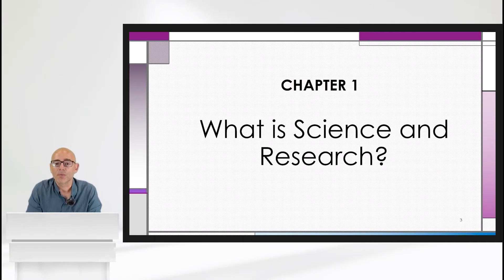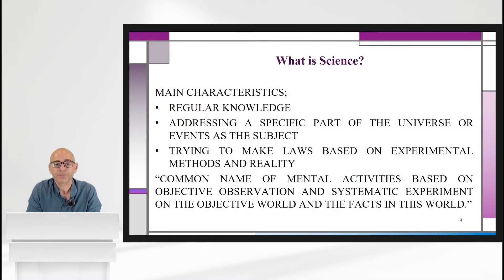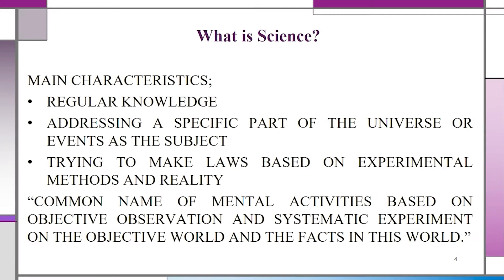So, what is science and research? This is a very general question to start with. Before making a general definition, it would be better to state the main characteristics of science. First, science is regular knowledge. Second, it addresses a specific part of the universe or events as its subject. Third, it tries to make laws based on experimental methods and reality. Based on these characteristics, science can be defined as the common name of mental activities based on objective observation and systematic experiment on the objective world and the facts in this world.